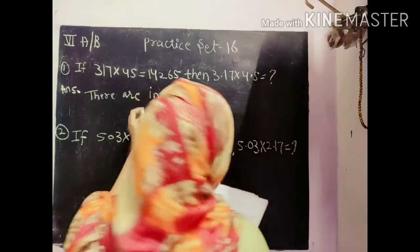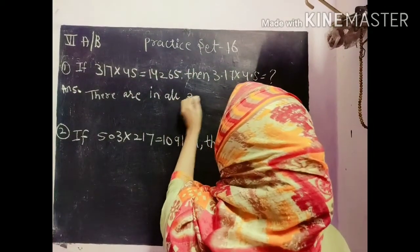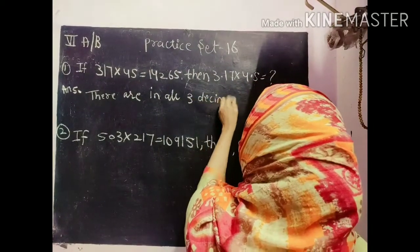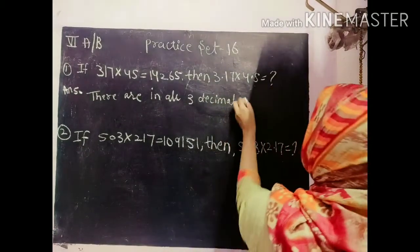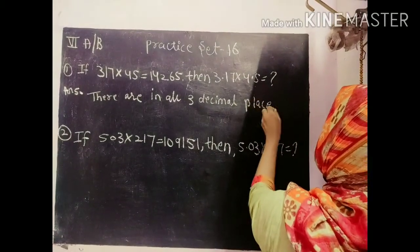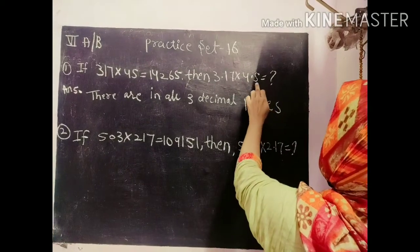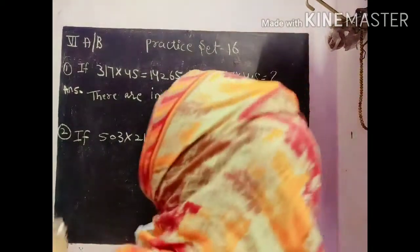There are all in 3 decimal places. How 3 decimal places? You can count it 1, 2, 3. So what will be the answer?